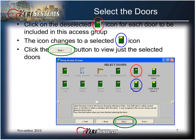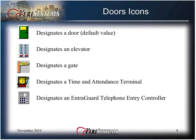All of the doors in your system will appear in the Select Doors window. Click on the deselected door icon for each door that you want to include in this access group. The icon will then change to a selected icon. Once all the doors have been selected, click the Next button. The door icons will only be available if the door type feature has been enabled in Setup System, the Doors tab, and the Options window.